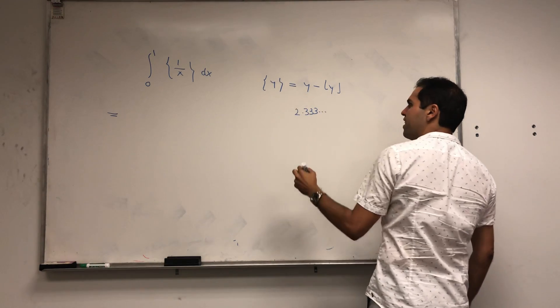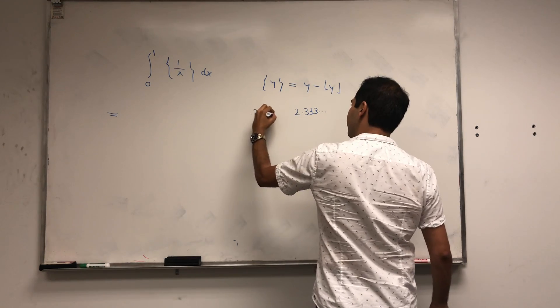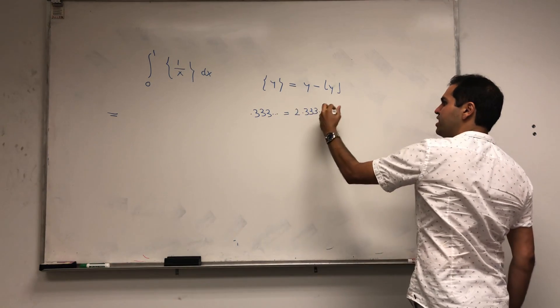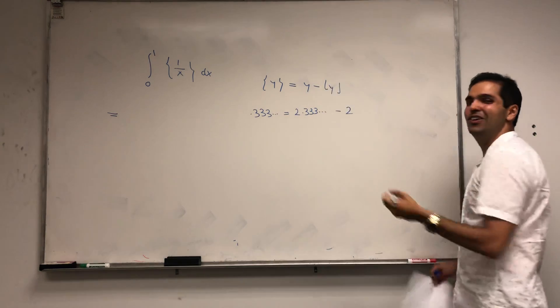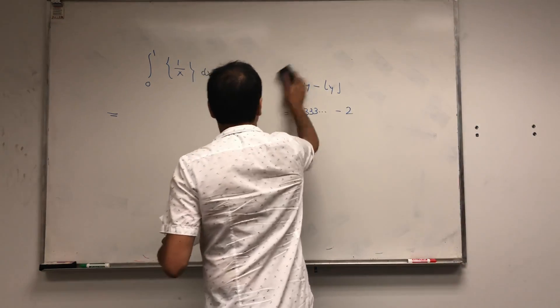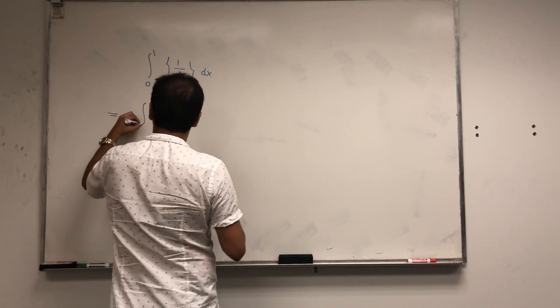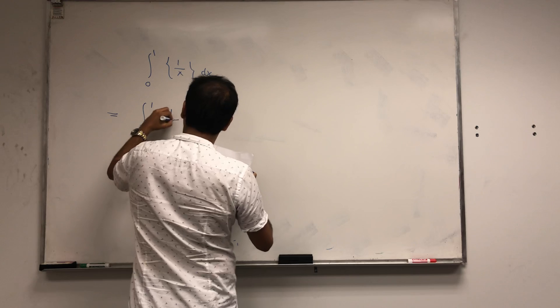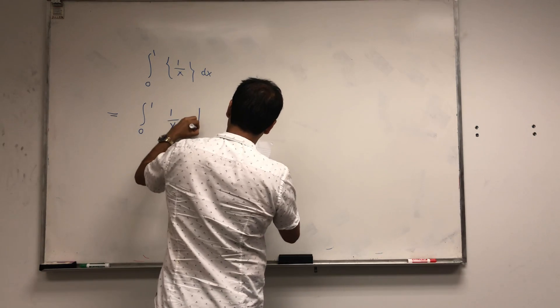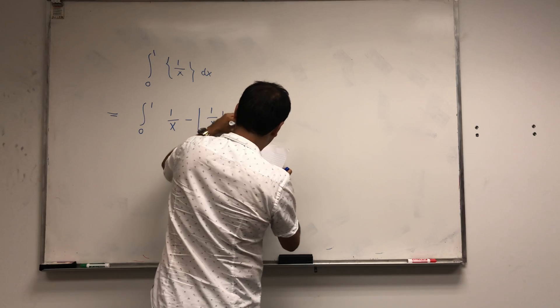then the fractional part is 0.333. And to get from here to here, you just subtract 2, which is the integer part. So this then becomes integral from 0 to 1 of 1 over x minus the integer part of 1 over x, dx.